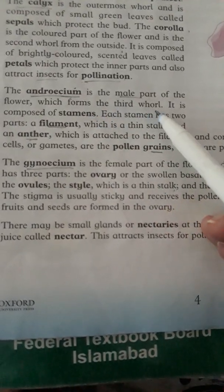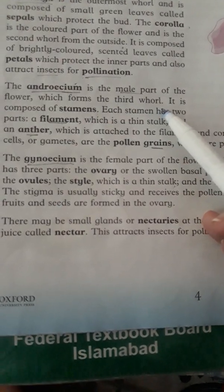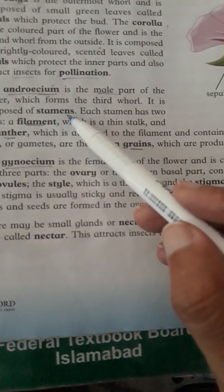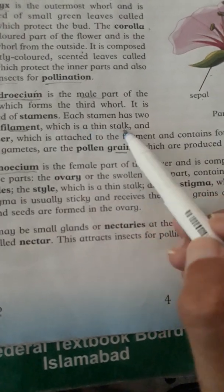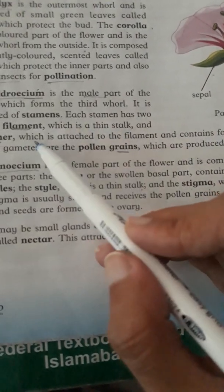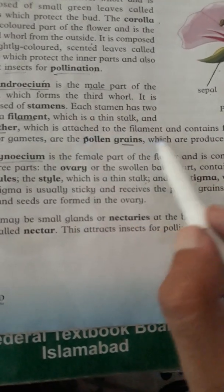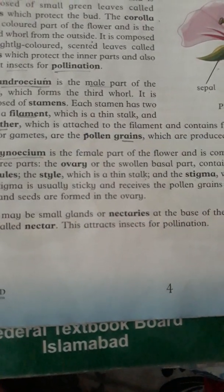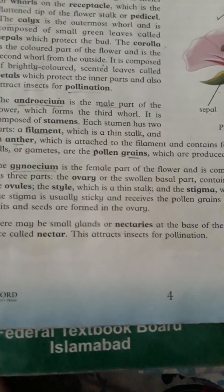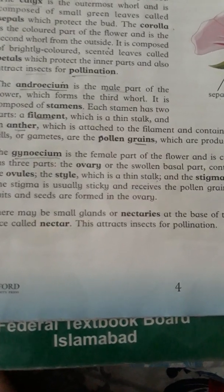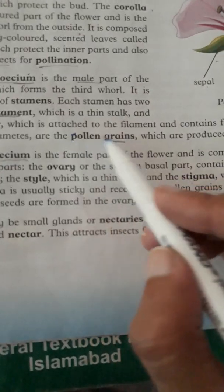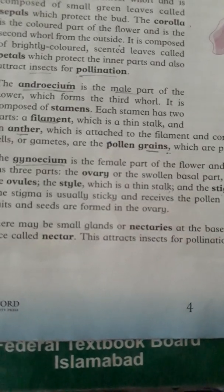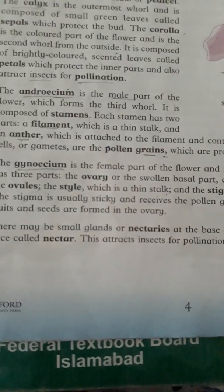Androecium is the male part of the flower, which forms the third whorl. It is composed of stamens — the filament, which is a thin stalk, and the anther, which is attached to the filament and contains four pollen sacs. Pollen sacs are the place where pollens are produced; the male sex cells or gametes are the pollen grains, which are produced inside the pollen sacs.